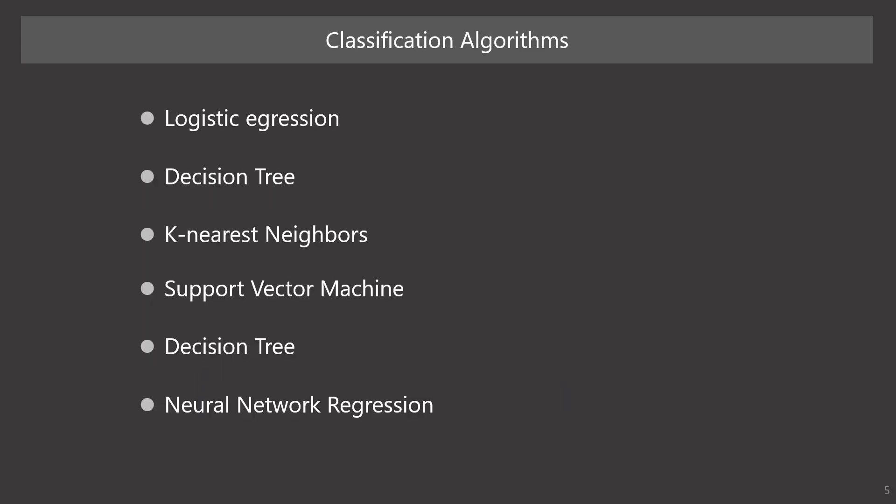There are many machine learning algorithms for classification. This is a list of popular algorithms, but it is not comprehensive. Explaining all of these algorithms is beyond the scope of this course. So I use logistic regression and decision tree as examples to simplify the explanation.